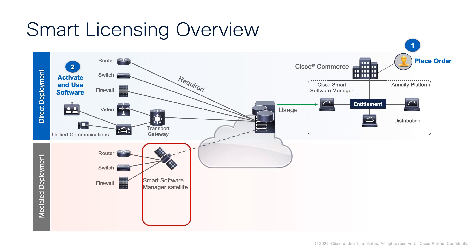For customers with a more strict security policy, the third option uses a specific smart licensing component called the Cisco Smart Software Satellite Server. Here, devices are configured to communicate with the satellite server, and then the satellite server transmits the information to the Cisco Cloud using periodic network synchronization.